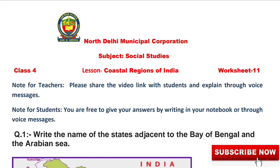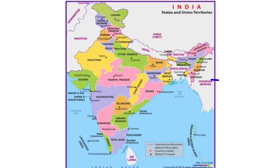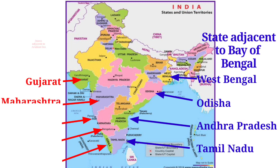Question 1: Write the name of the states adjacent to the Bay of Bengal and the Arabian Sea. Here you can see the map of India and you can find out the states adjacent to the Bay of Bengal and Arabian Sea. In question 1, there is a map on your worksheet. You can see which states are in the Bay of Bengal and Arabian Sea.